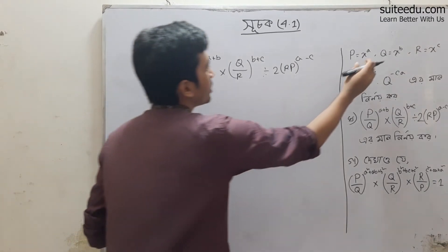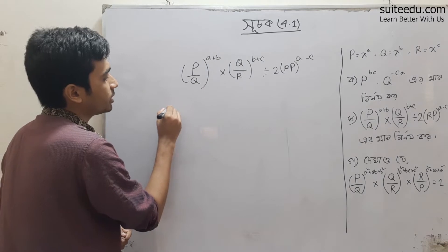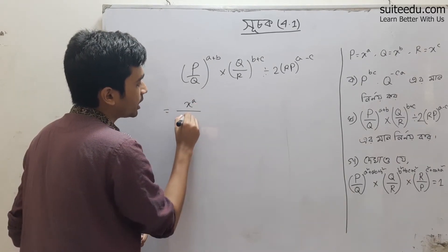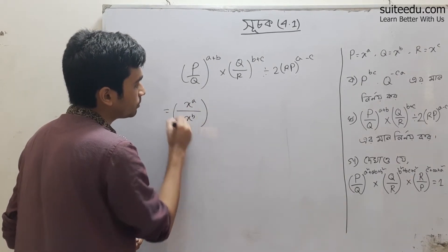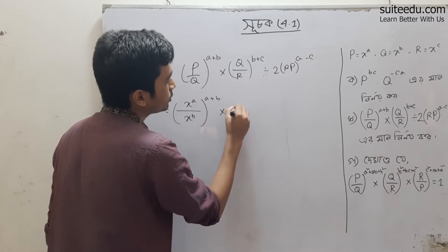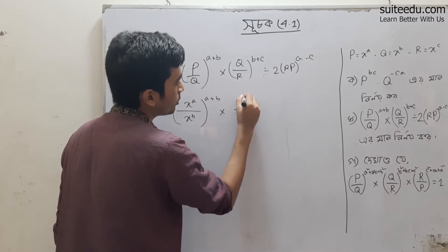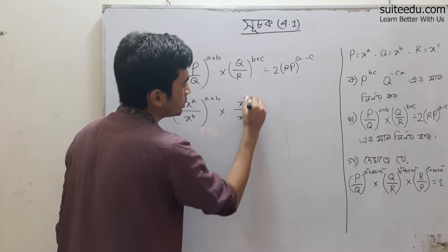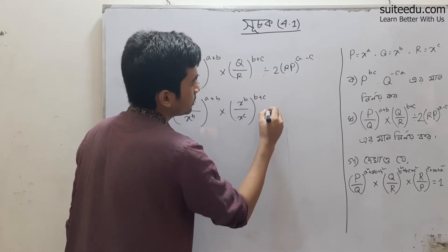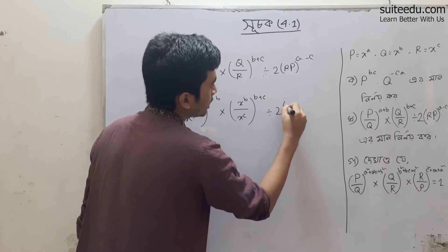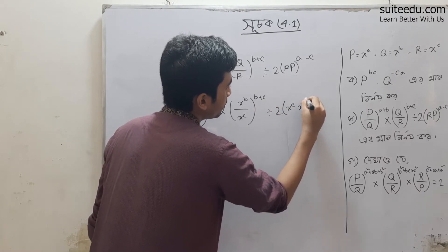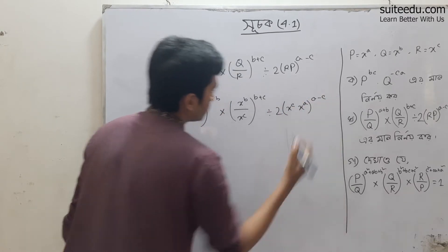We substitute: P equals x to the power A, Q equals x to the power B, whole to the power a plus B. Then Q equals x to the power B, R equals x to the power C, whole to the power B plus C.